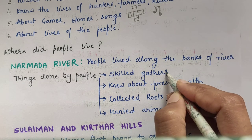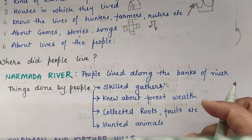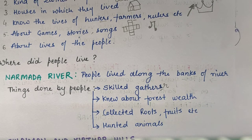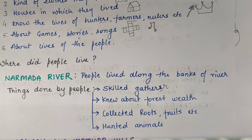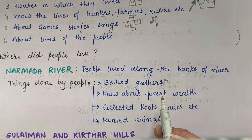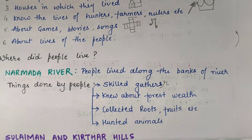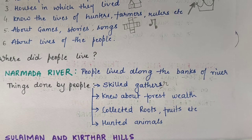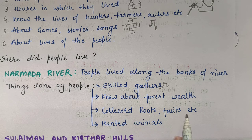Skilled gatherers means those people who were gathering food from the forest. Like they were not doing agriculture but only gathering food — forest mein jo bhi produce hota hai, they were gathering that. They knew about forest wealth and which plants were nutritious and which were poisonous. They collected roots, fruits, etc.